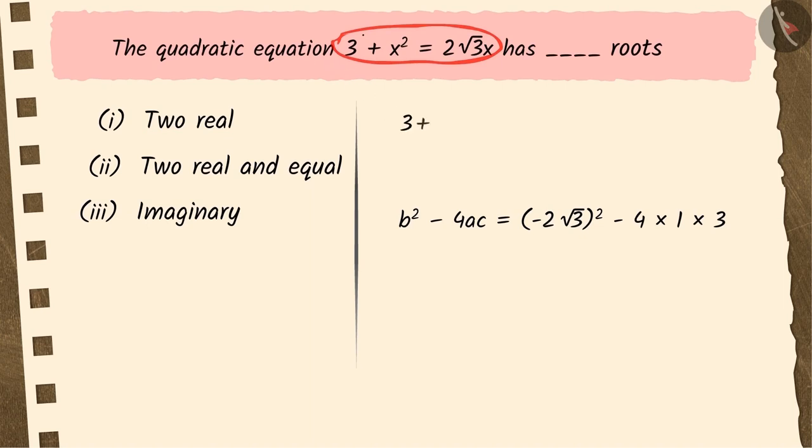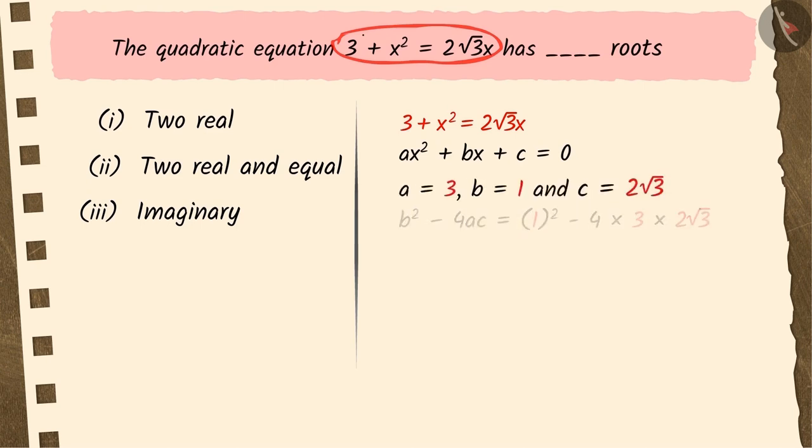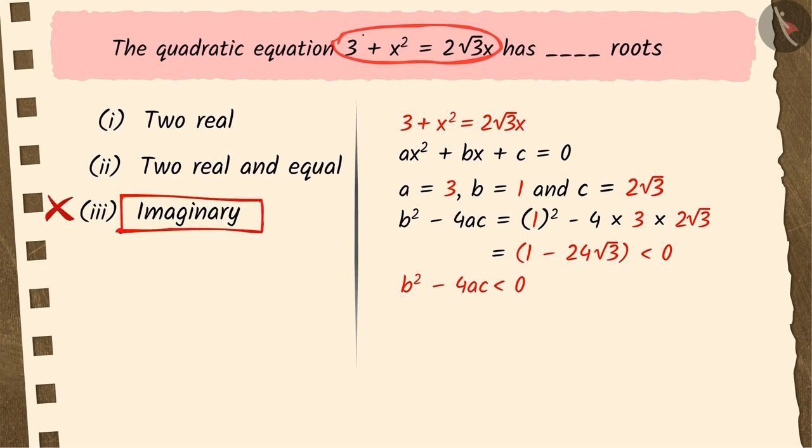Nandini found out the values of A, B and C without writing the equation in the standard form and solved the discriminant by substituting the values of A, B and C in it, from which she got the value of discriminant less than 0 and hence she concluded that the given quadratic equation will have imaginary roots. Therefore, Nandini chose option 3rd, which is incorrect.